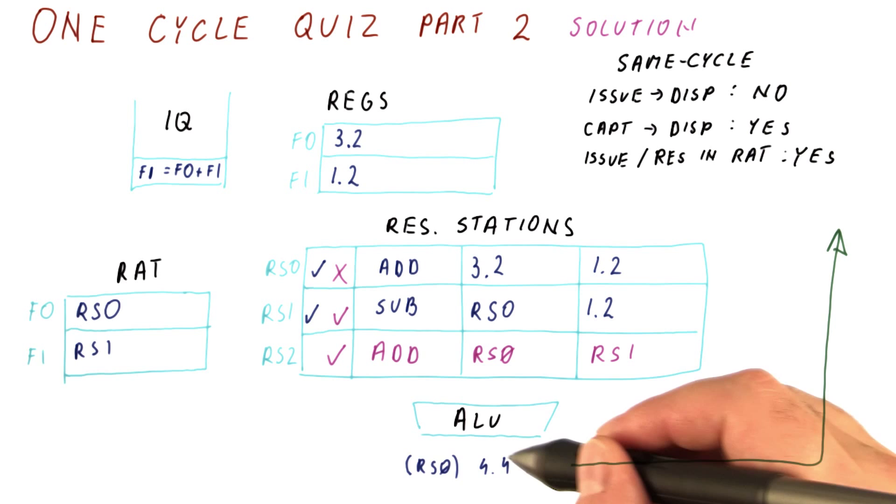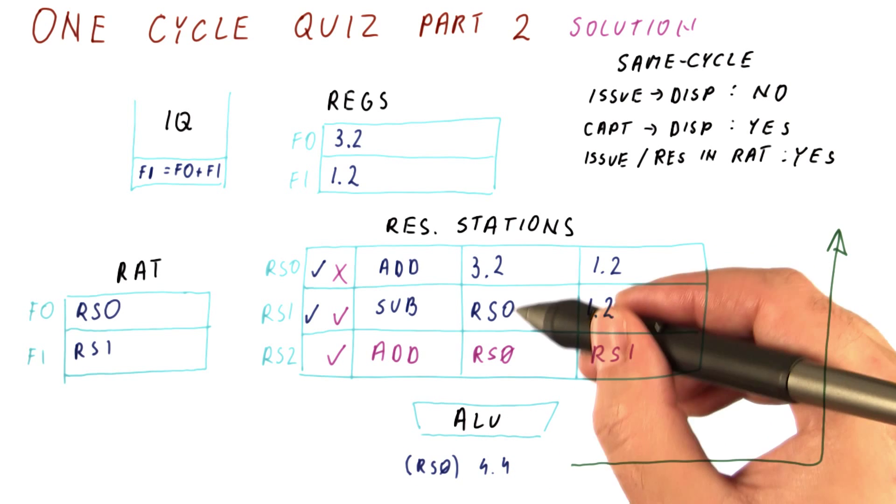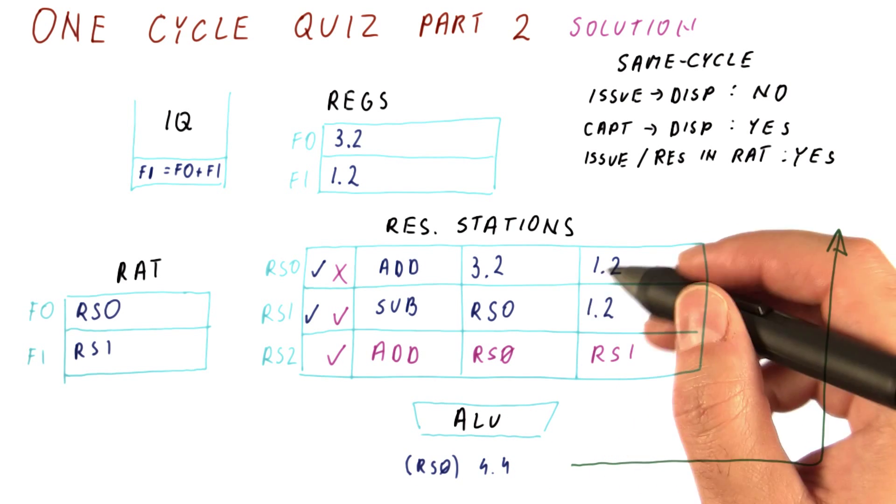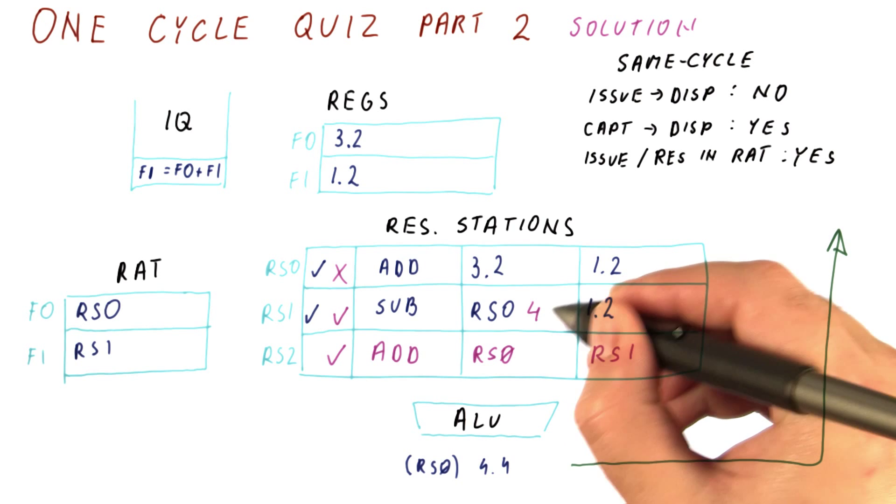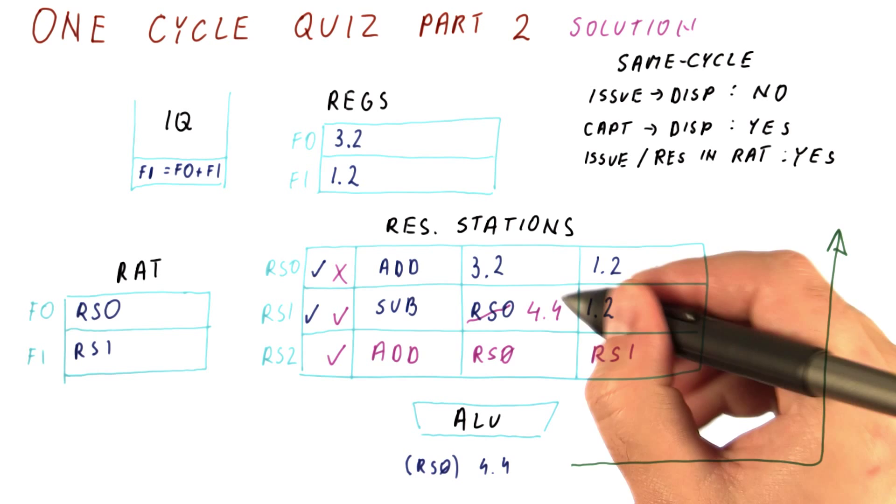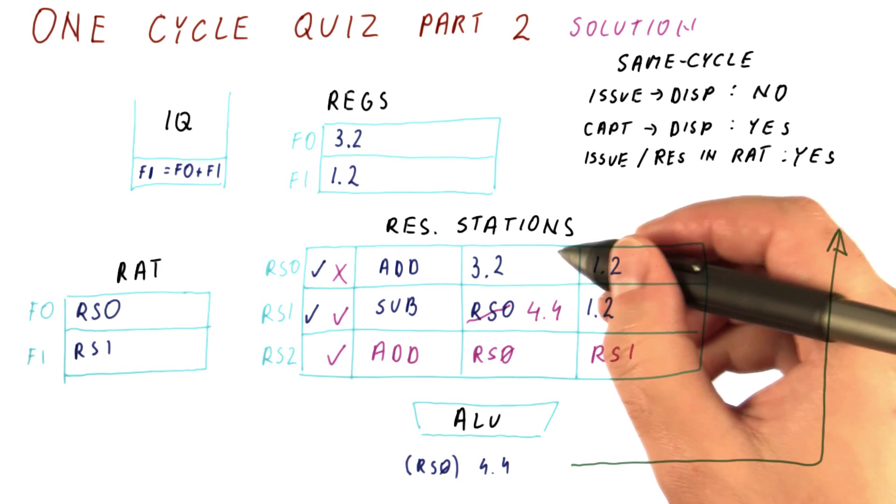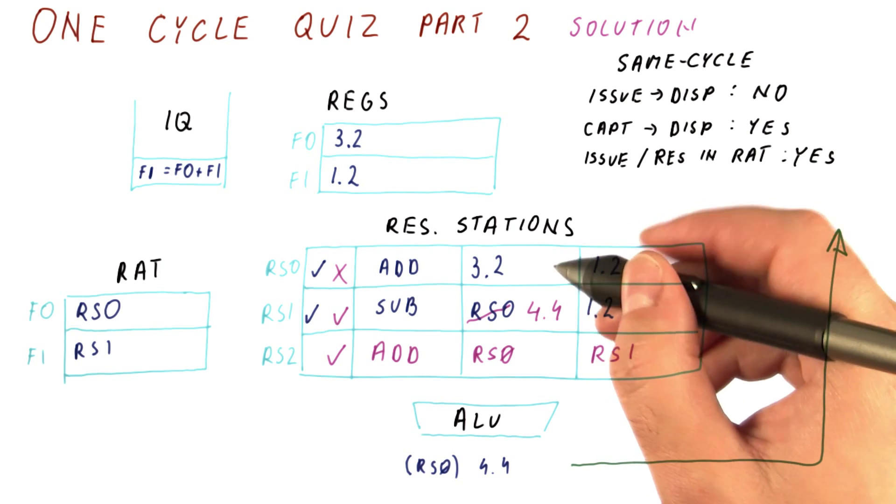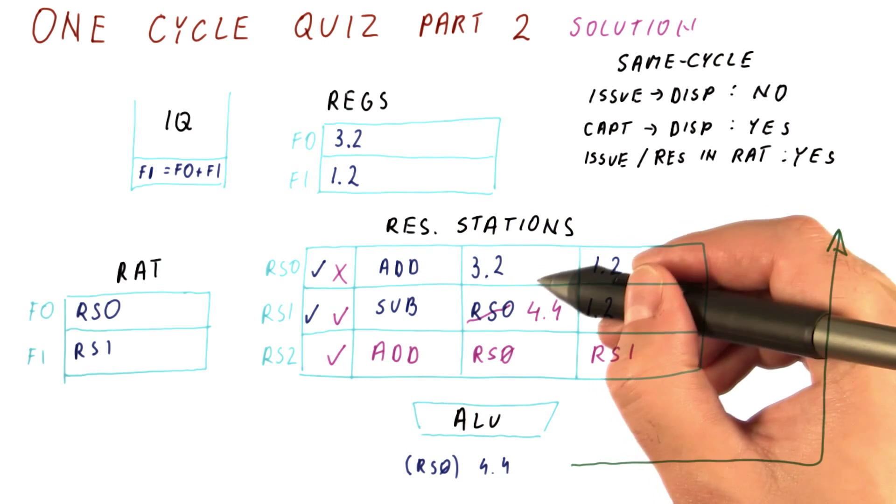The result that is broadcast here is captured by anybody waiting for RS0. So this here becomes 4.4, thus this is a change that you needed to make. This one here stays the same. Actually, this reservation station is free, so it doesn't matter what's here, but it stays the same.